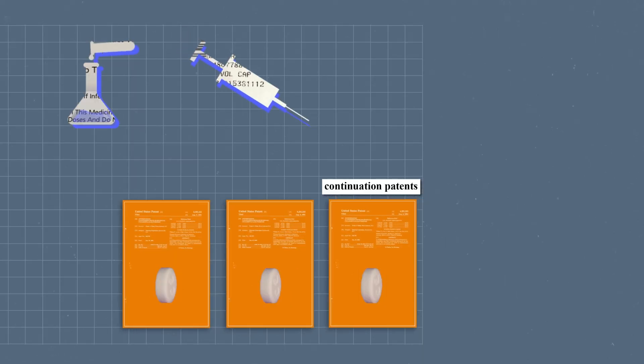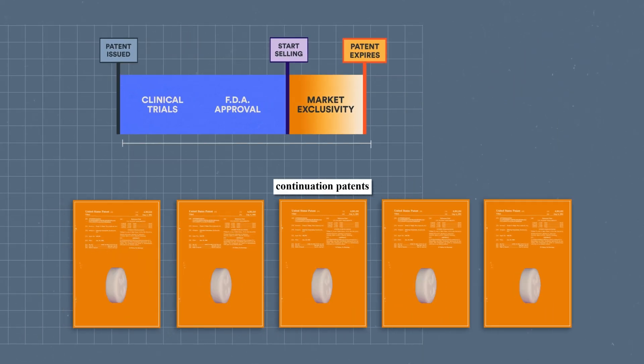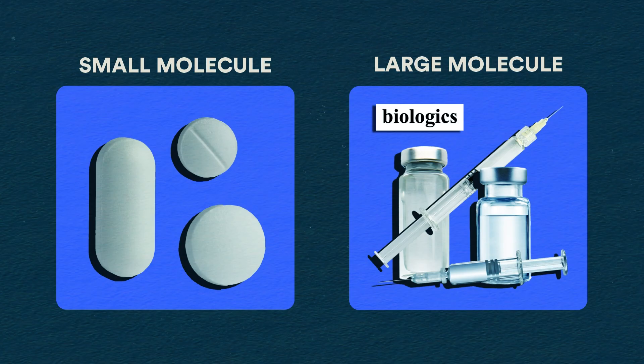As we learned in the last video, drug makers can obtain additional patents on their drug to extend its market exclusivity. But the distinction between small molecule and large molecule drugs is an important one.